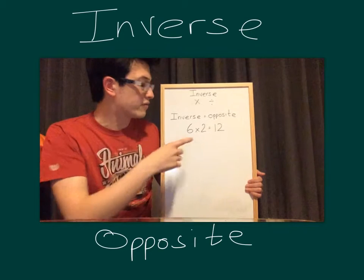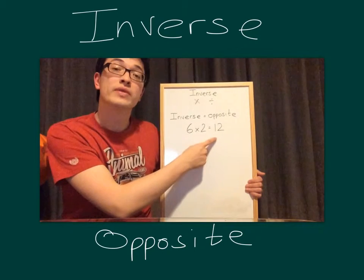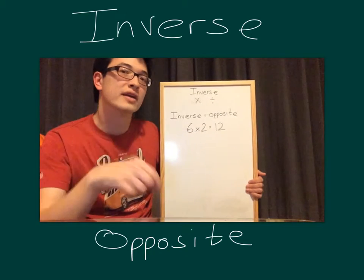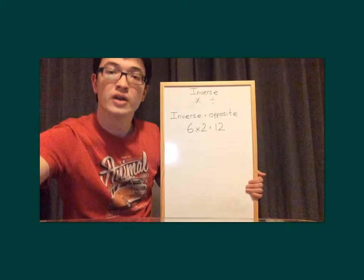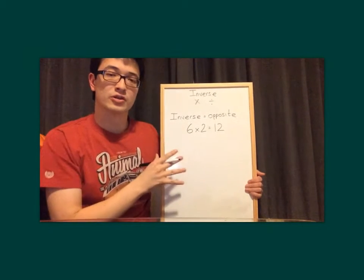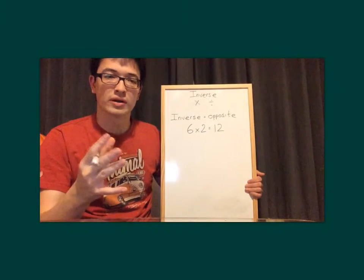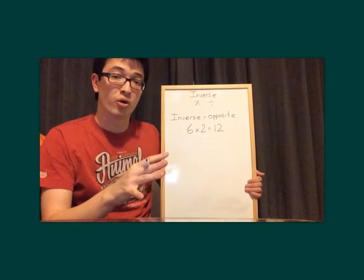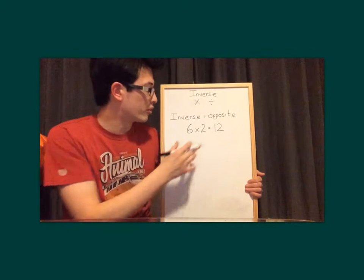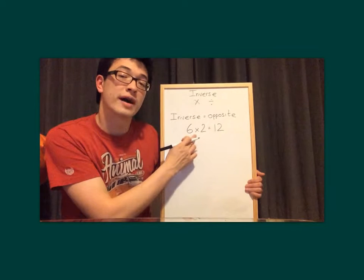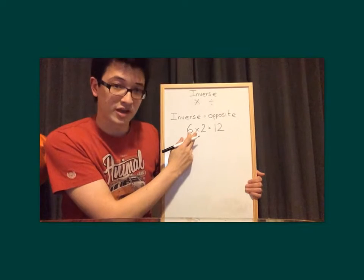Here we have a very simple multiplication fact: 6 times 2 equals 12. I'm going to show you how to write the inverse, or the opposite, of that times table fact. To write the inverse of 6 times 2 equals 12, imagine in your head you've got a giant bubble, and we're going to put that bubble around 2. But if we put that magic bubble around 2, we've also got to put it around the times — the operation.